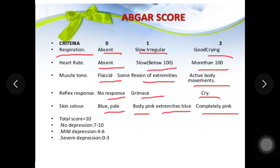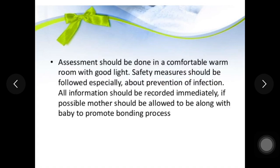Total APGAR score is 10 (5 criteria × 2). Interpretation: score 7–10 = no depression; score 4–6 = mild depression; score 0–3 = severe depression.